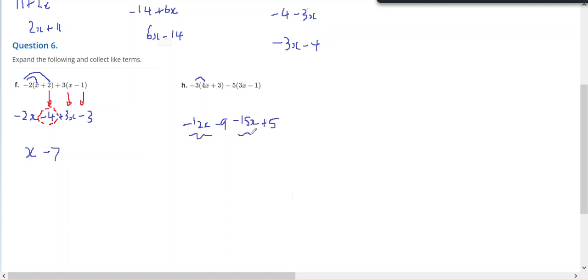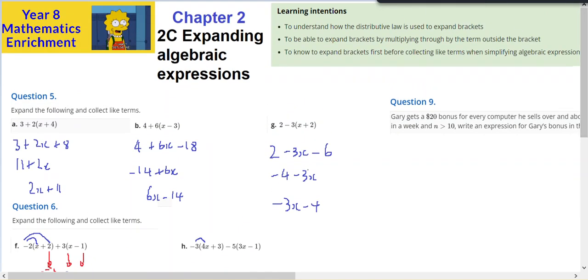Of the x's, minus 12 minus 15 is minus 27x. And negative 9 plus 5 is negative 4. So they're the fluency questions from 2c.